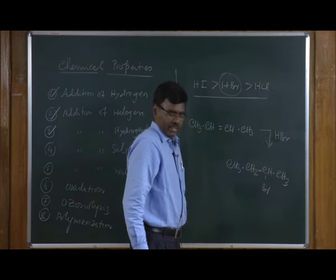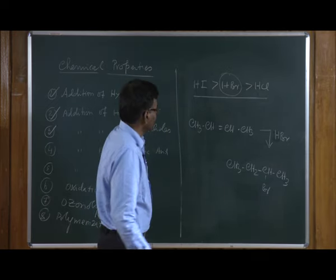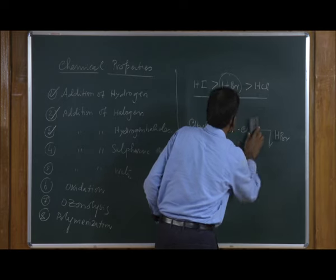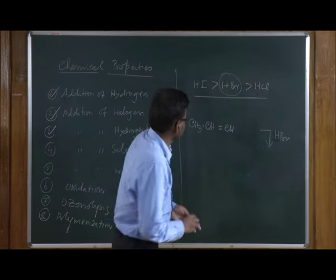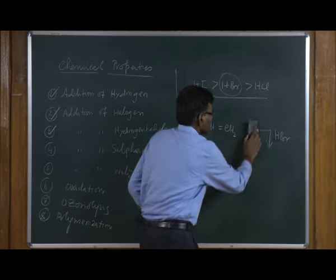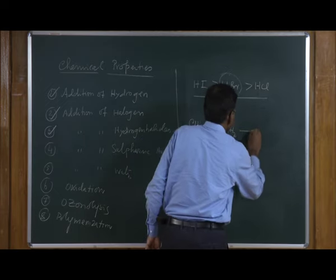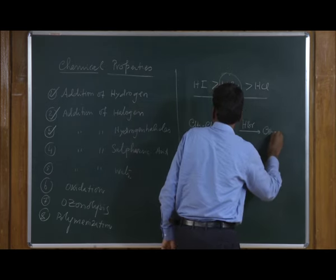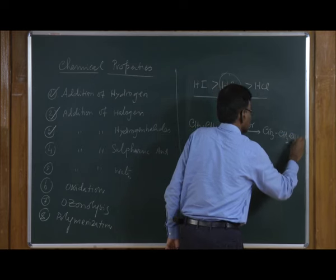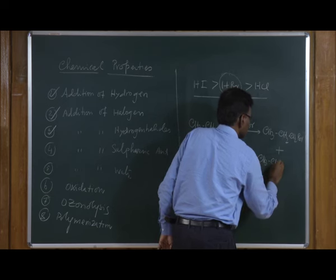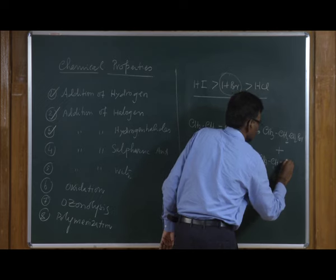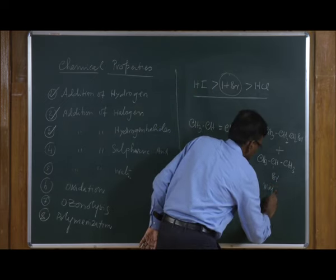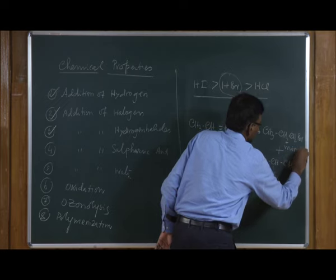On the other hand, if you take unsymmetrical alkenes — for example, propene — when you react propene with HBr, you end up with a mixture of compounds. There is a possibility of forming two compounds; however, one will be the major compound and the other will be the minor product.